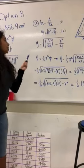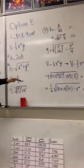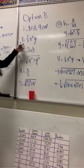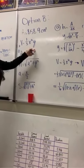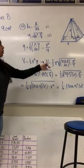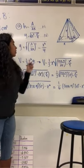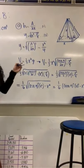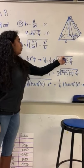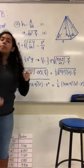That result could be plugged into the volume formula — the third formula we used: volume = one-third x squared times y. Using this, we plugged in y and had: volume = one-third x squared times the square root of (858.9 over 2x) squared minus x squared over 4.